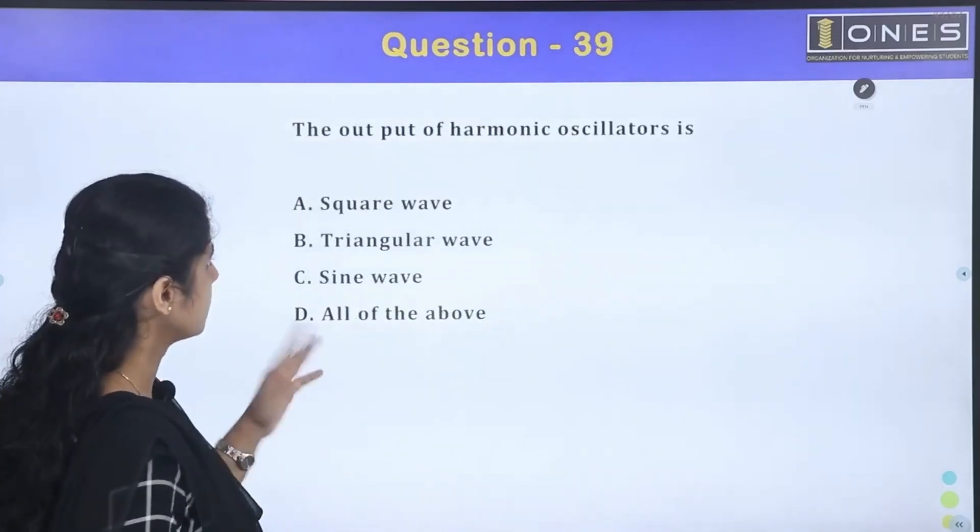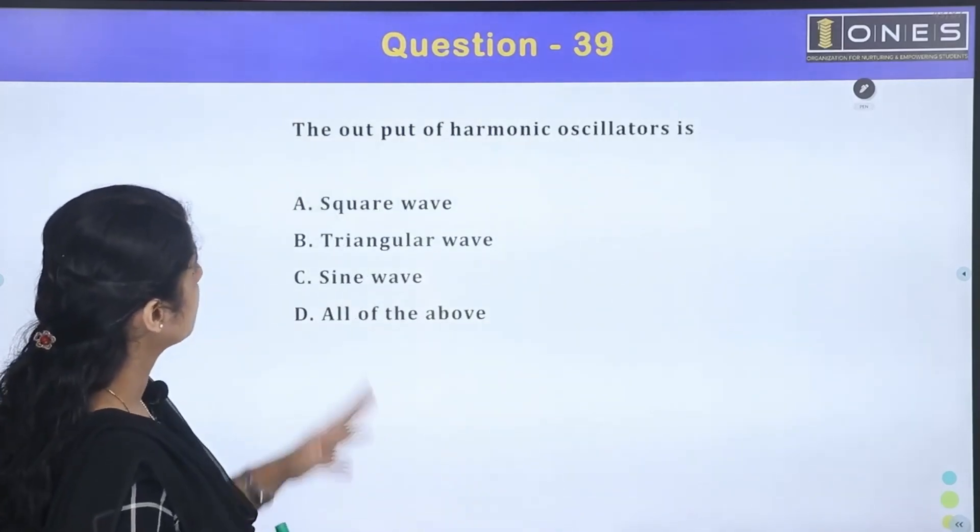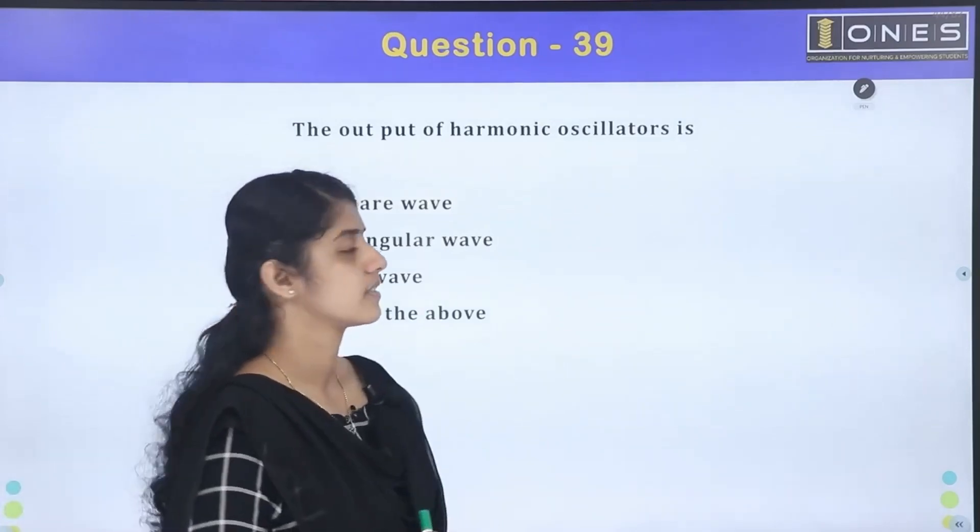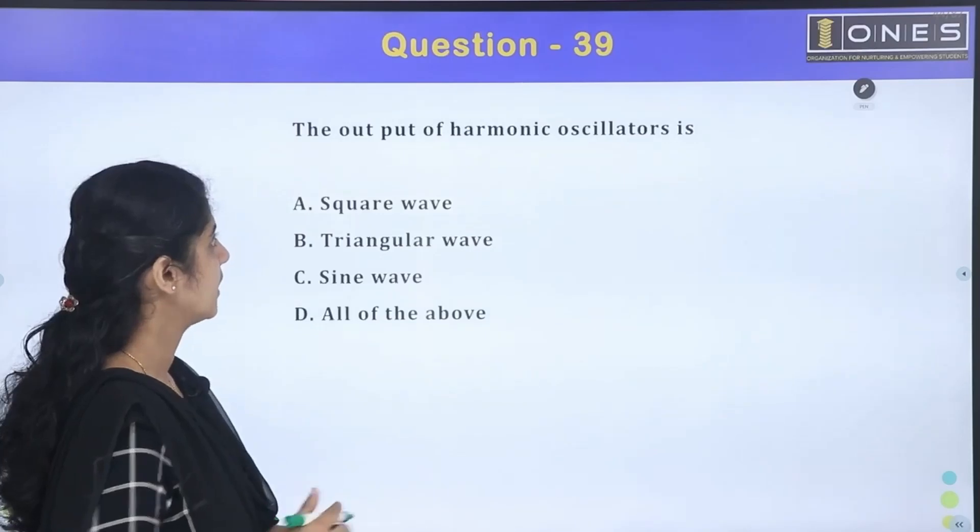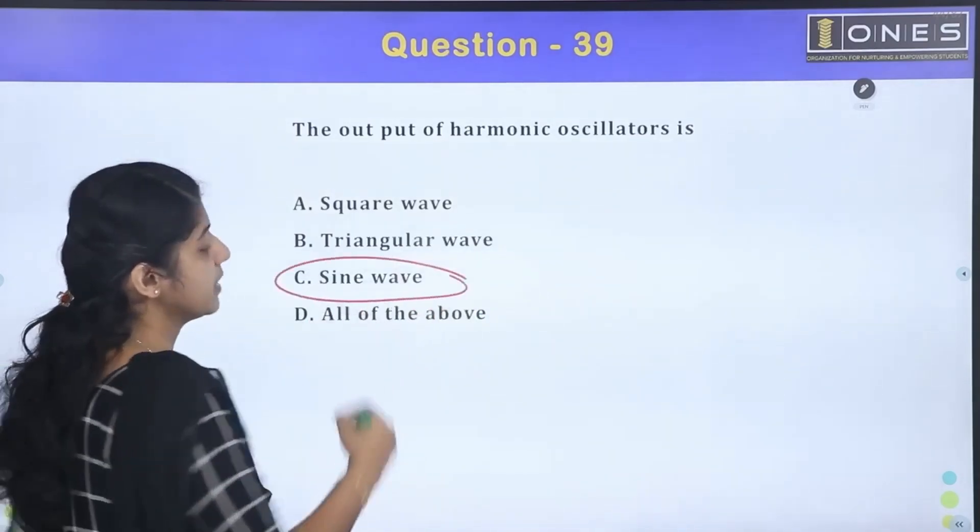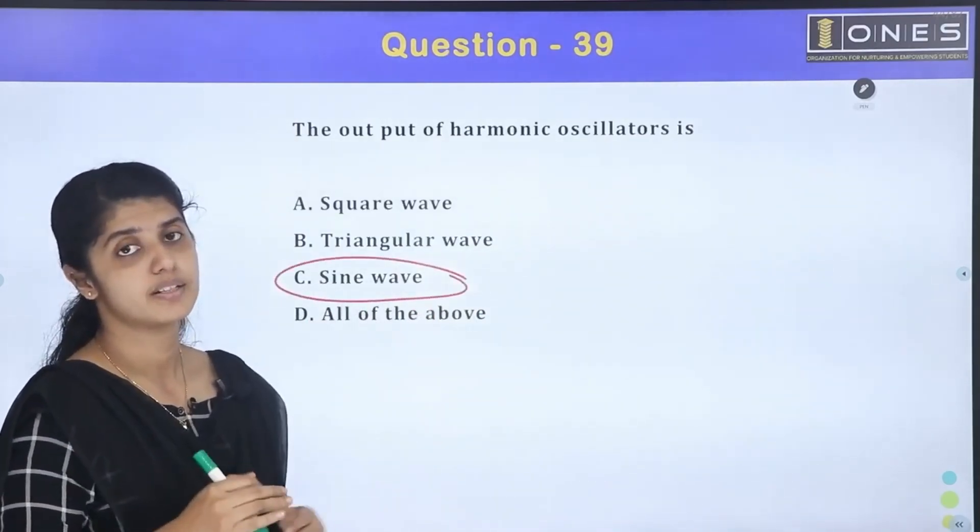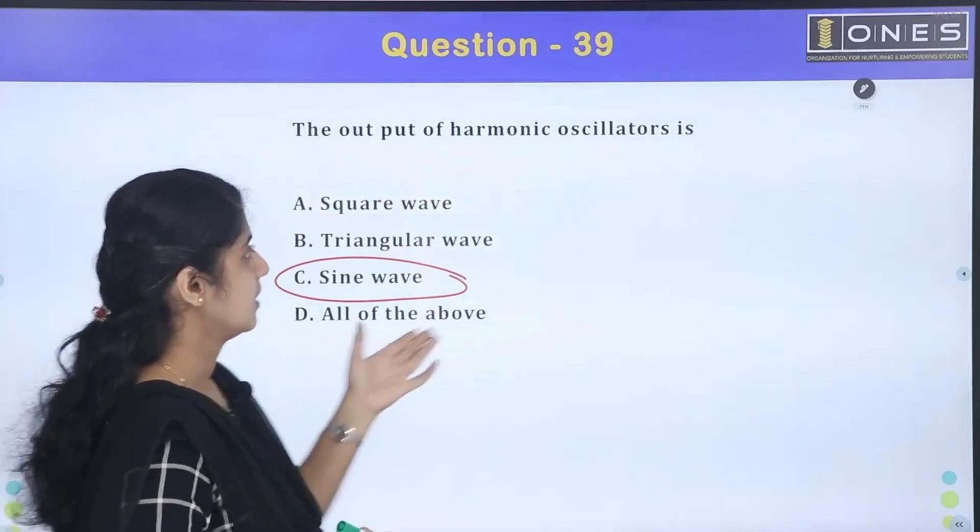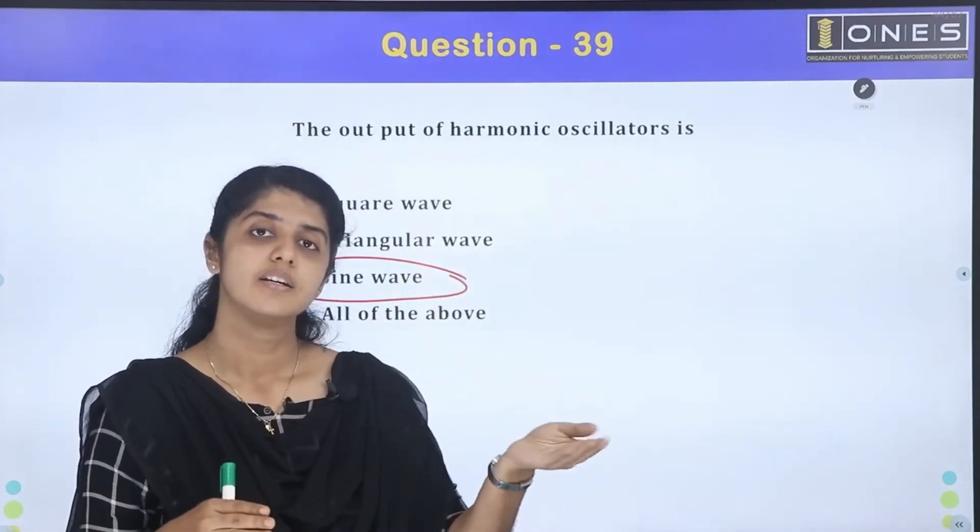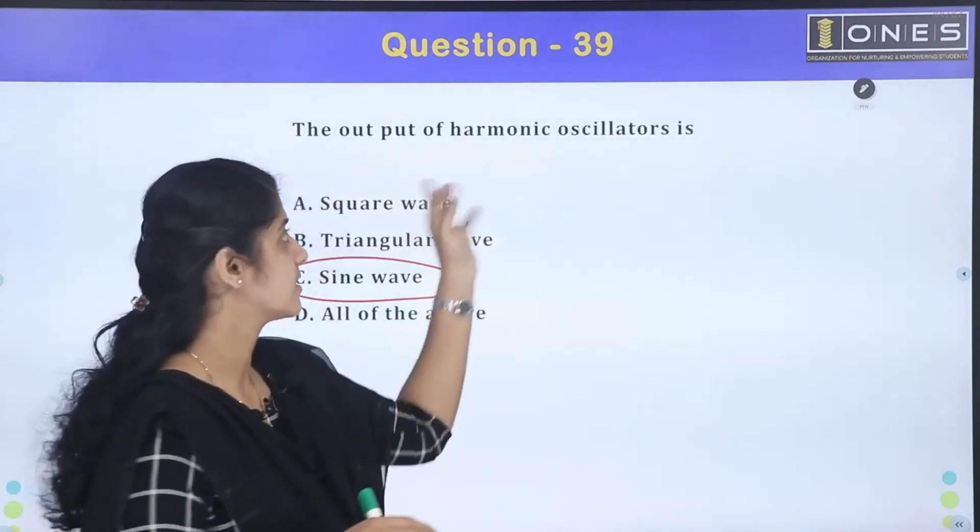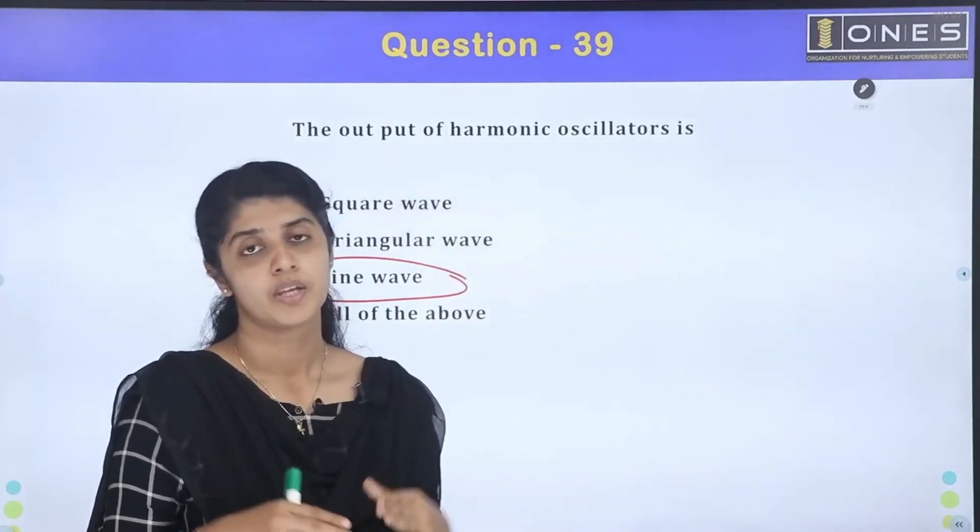Next one: output of harmonic oscillators is square wave, triangular wave, sine wave, all of the above. What is harmonic oscillators output? Sinusoidal waveforms. Harmonic oscillators - waveform generation - that means sine wave producing oscillators are harmonic oscillators.